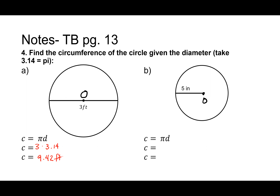Nice job. How about letter b — tell me what my second line of work should look like on letter b. Liam: 10 times 3.14. Where'd you get the 10 from? The radius. Yep, so we're given the radius but we need the diameter, so we want to write the diameter there. Great job, Liam! What'd you get for your answer? 31.4 inches — great job!